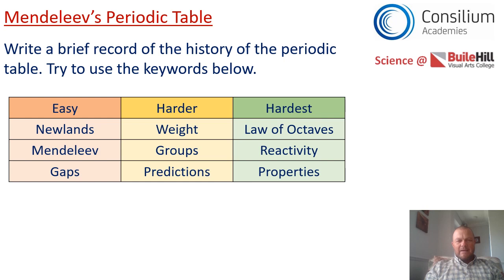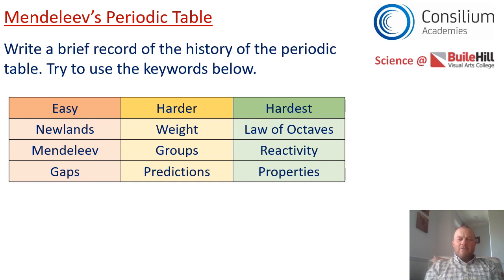What we'd like you to do now is produce a piece of writing. If done really well, it could include the nine key words shown below. You may not be able to use all nine words — don't worry about that; use as many as you can. Produce the piece of writing and then email it to your science teacher.